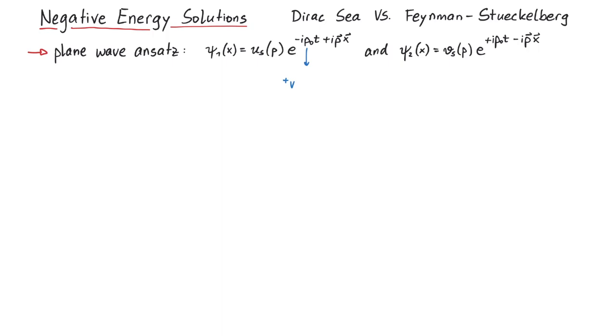In both cases, p^0 is the positive square root of p squared plus m squared, which is a positive number.